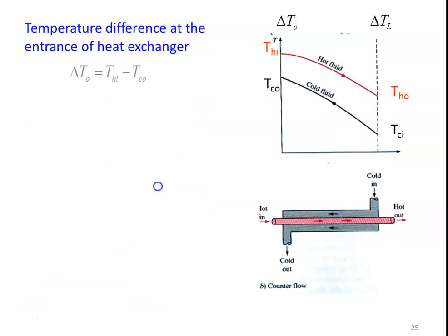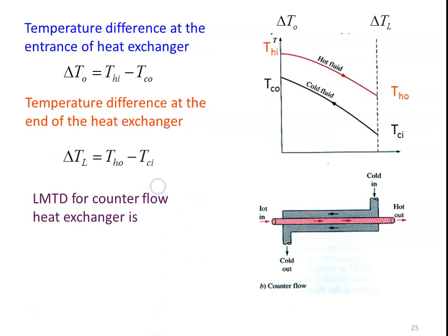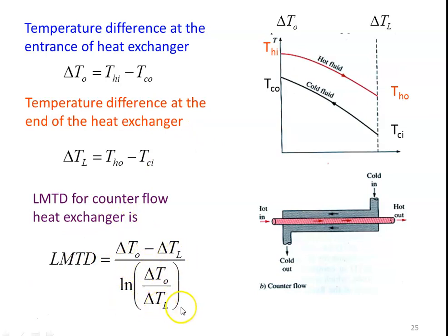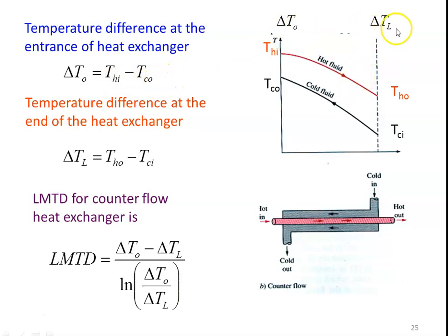For the counter flow heat exchanger, the expression for LMTD is the same form: LMTD = (ΔT₀ − ΔTL) / ln(ΔT₀ / ΔTL). However, the temperature differences are defined differently. Here ΔT₀ = Thi − Tco and ΔTL = Tho − Tci. With these values, you can calculate the LMTD for the counter flow heat exchanger.